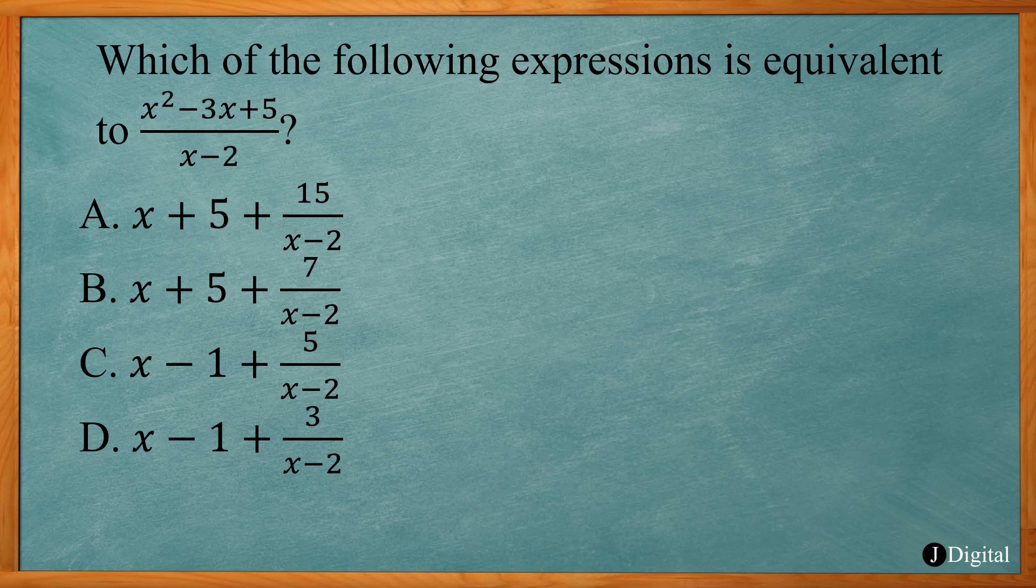If you look at the answer choices and get something that looks like that, you need to do polynomial division. So you set that up by putting the x minus 2 on the outside—what's on the bottom goes on the outside—and underneath here it goes x squared minus 3x plus 5.